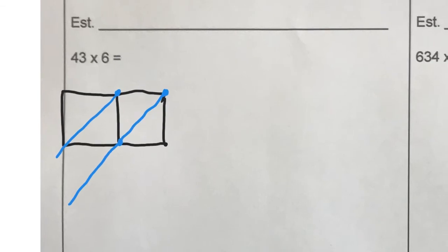And let me give myself some more space here. Okay, so now 43 can go here and 6 can go here and 3 times 6 is 18 and 4 times 6 is 24 and now you just add those up diagonally. So adding this way and this way and this way and you're going to end up with 8 in the ones place. 1 plus 4 is 5,